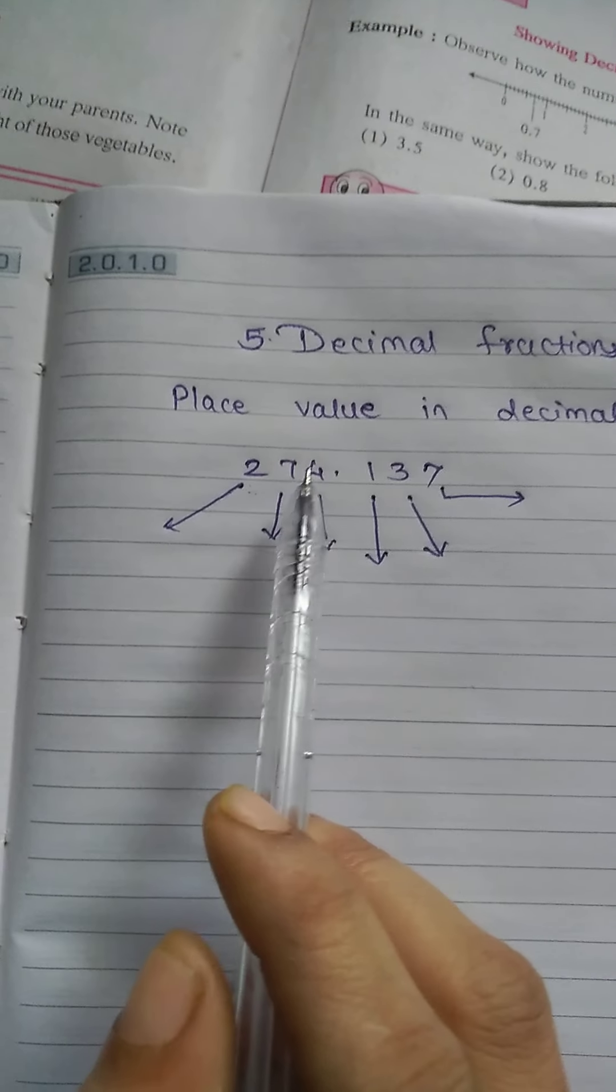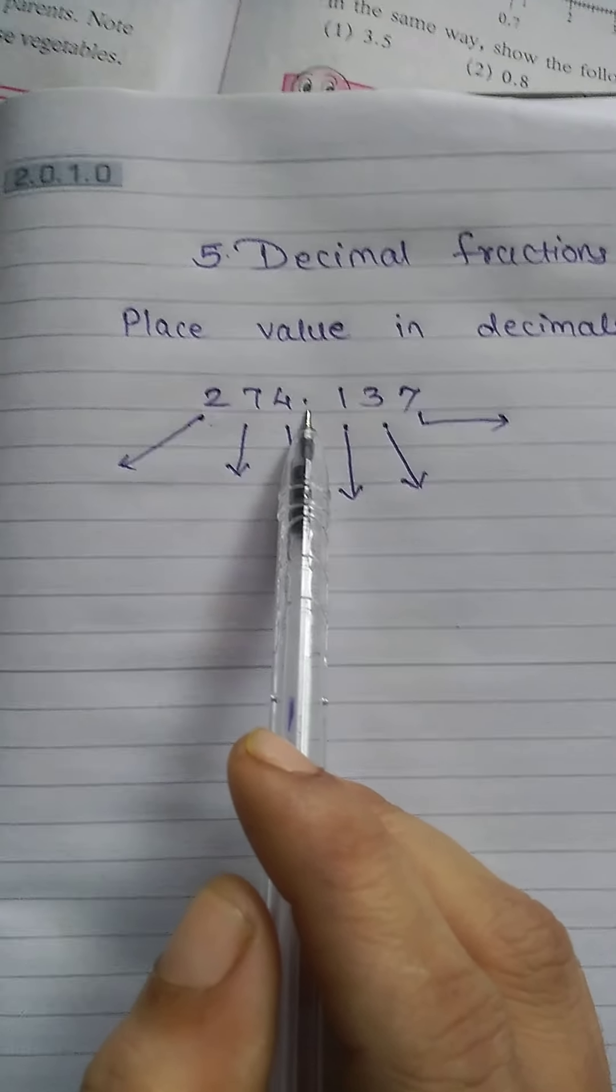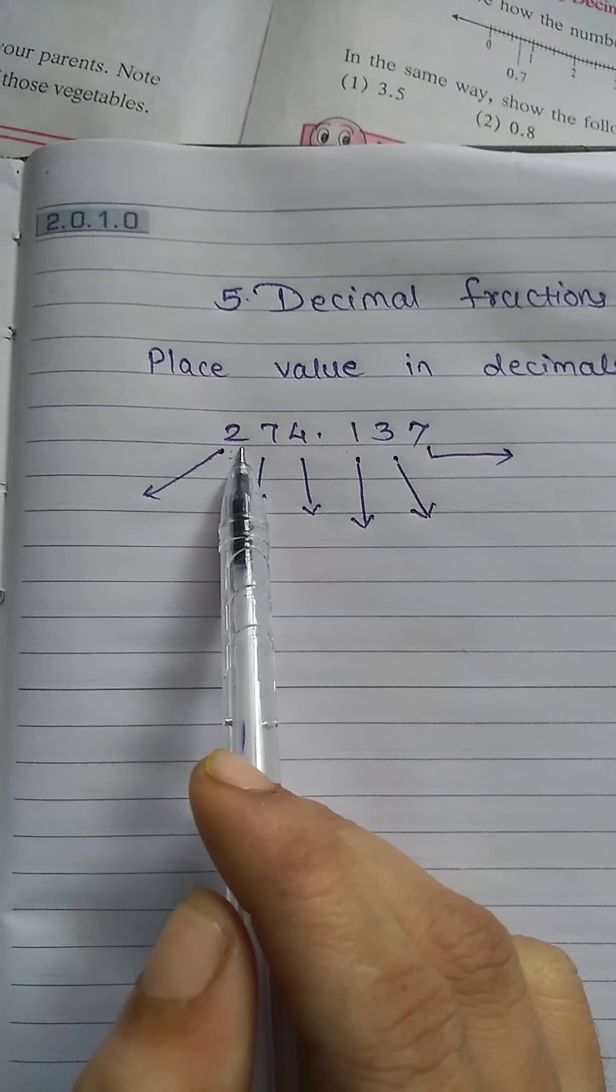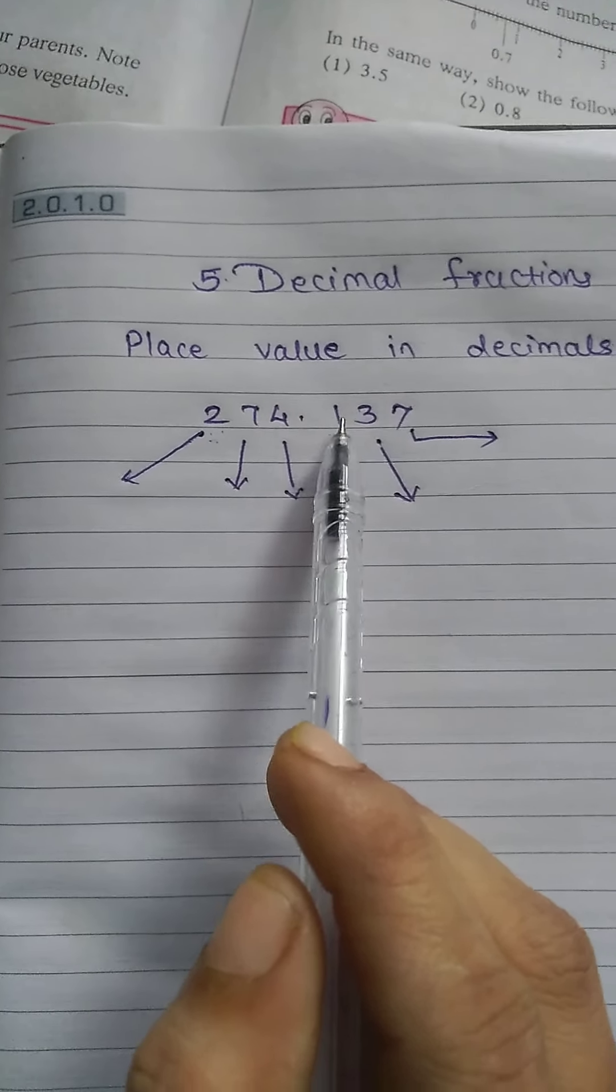You need tens and hundreds, but what to do if the number is in decimal form? So this number is 274.137. I hope you know how to read the number 274.137.